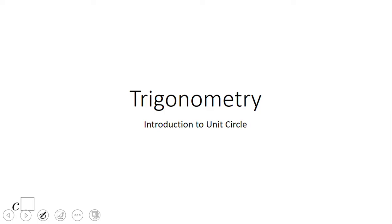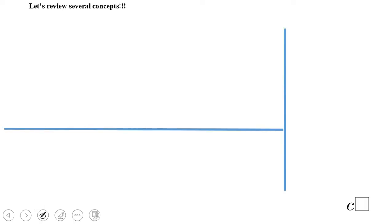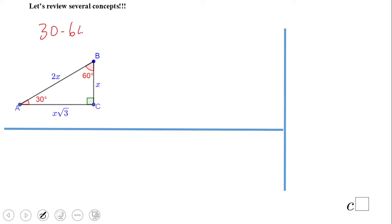Welcome back on C Square. In this video we're going to take a look at the unit circle. I'll give you several concepts, and the first one is this special right triangle — what we call a 30-60-90 triangle, because you have an angle of 30 and an angle of 60 and 90.